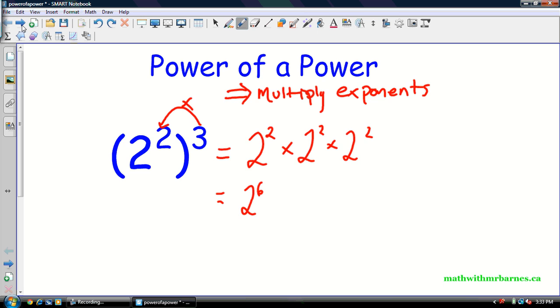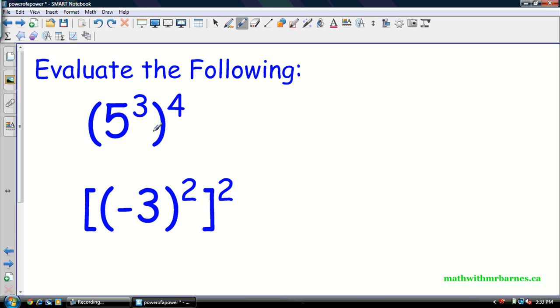All right, let's check out a couple examples. Very similar to the last one. We have 5 to the 3 to the exponent 4. So I go 3 times 4 is 12, so this is equal to 5 to the 12.